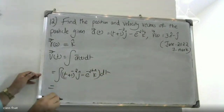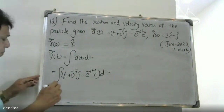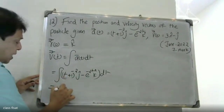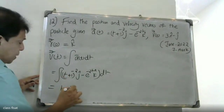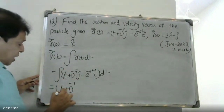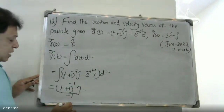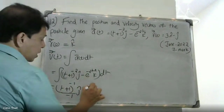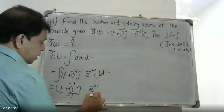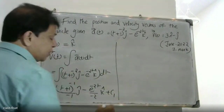Integrating the j component: t plus 1 raised to minus 2 integrates to t plus 1 raised to minus 1 divided by minus 1 into j. For the k component: e raised to minus 2t integrates to e raised to minus 2t divided by minus 2, plus constant C1.